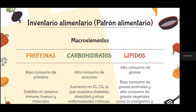En el caso de los carbohidratos, el alto consumo de azúcares aumenta el índice glucémico, la carga glucémica, y puede ocasionar diabetes, obesidad y otras enfermedades crónicas relacionadas con enfermedades cardiovasculares. Cuando consumimos lípidos y muchos carbohidratos, podemos generar problemas de hipertensión. El alto consumo de grasas, sobre todo de tipo vegetal como mayonesas, margarinas y aceites, tiene que reducirse, no solo en estas comunidades sino a nivel mundial.